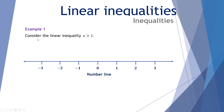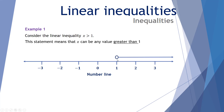Let's look at some examples. Consider the linear inequality x > 1. This statement means that x can be any value greater than 1. On our number line, we represent this with a hollow circle around the 1 and a line continuing to the right with an arrow. This means all numbers greater than 1. The hollow circle means it doesn't include 1, only numbers greater than 1.